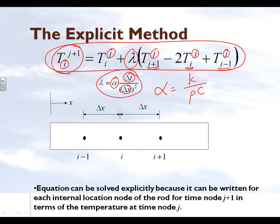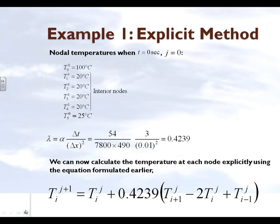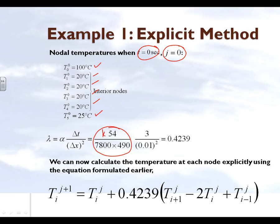We are going to use this discretized form of the second order parabolic partial differential equation to find temperatures at the nodes at the times ahead. Starting at t=0 (j=0), with 100°C on the left and 25°C on the right, and 20°C at interior nodes, we calculate alpha as k divided by rho c, giving us a lambda value of 0.4239.